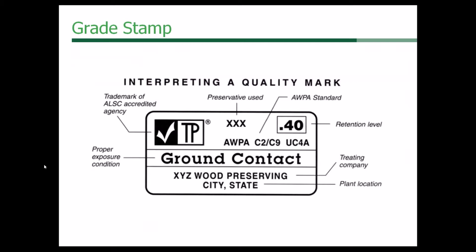The quality marks that show up on preservative treated products are important because they tell you that you've got something certified with quality assurance per the American Wood Preservers Association, and for treated lumber, the American Lumber Standard Committee that accredits these organizations. The preservative used, the retention level, the company, and the proper exposure condition all show up on those stamps — stapled to the end of the product.